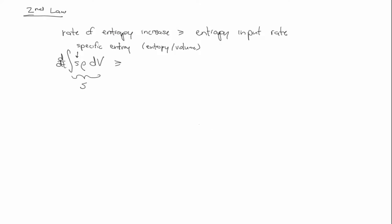And that's got to be greater than or equal to the entropy input rate. And so I'm just going to write down—this is the rate of energy generation, R, like a radioactive term—and T is the thermodynamic temperature.